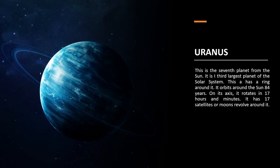Uranus is the seventh planet from the sun and the third largest in the solar system after Jupiter and Saturn. It also has rings around it. It orbits around the sun in 84 years and rotates on its axis in 17 hours and 14 minutes. It has 17 satellites or moons revolving around it.